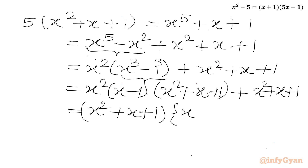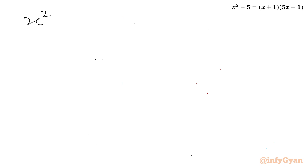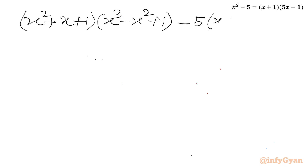So we get x squared times (x minus 1)(x squared plus x plus 1) plus (x squared plus x plus 1). We take (x squared plus x plus 1) as common, giving (x squared plus x plus 1) times (x squared times (x minus 1) plus 1), which simplifies to (x squared plus x plus 1)(x cubed minus x squared plus 1). Moving all terms to one side and setting equal to zero: (x squared plus x plus 1)(x cubed minus x squared minus 4) equals 0.